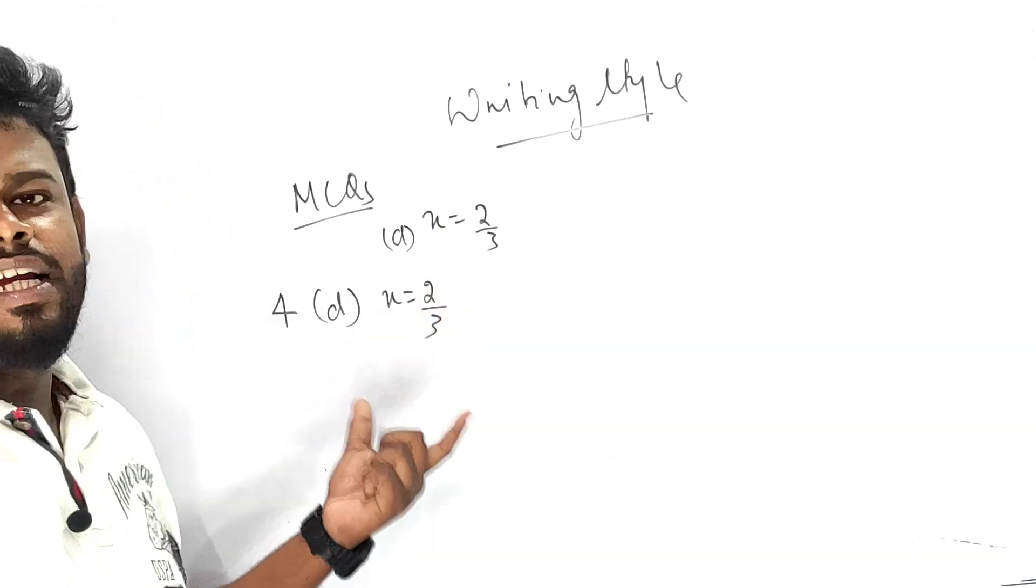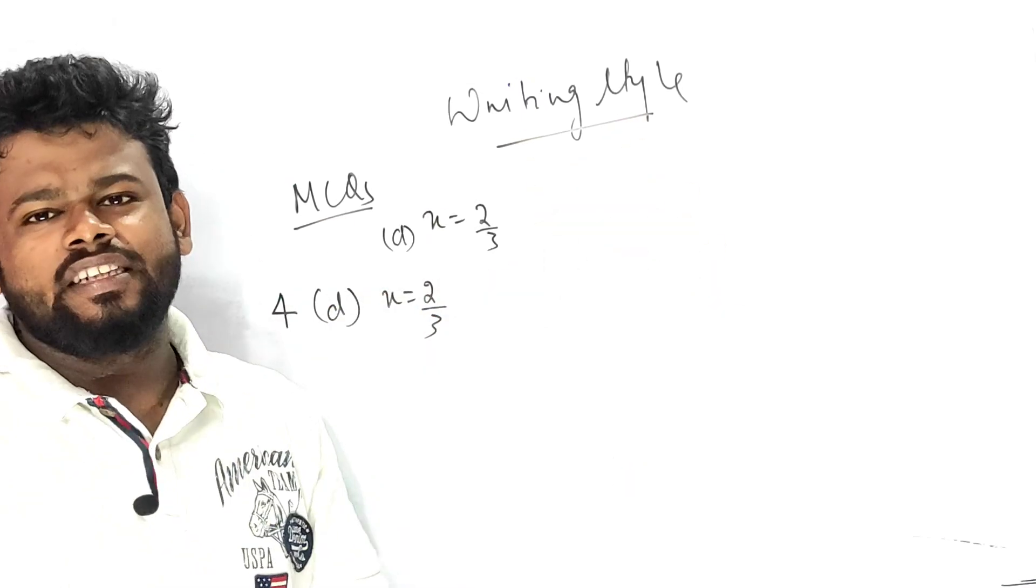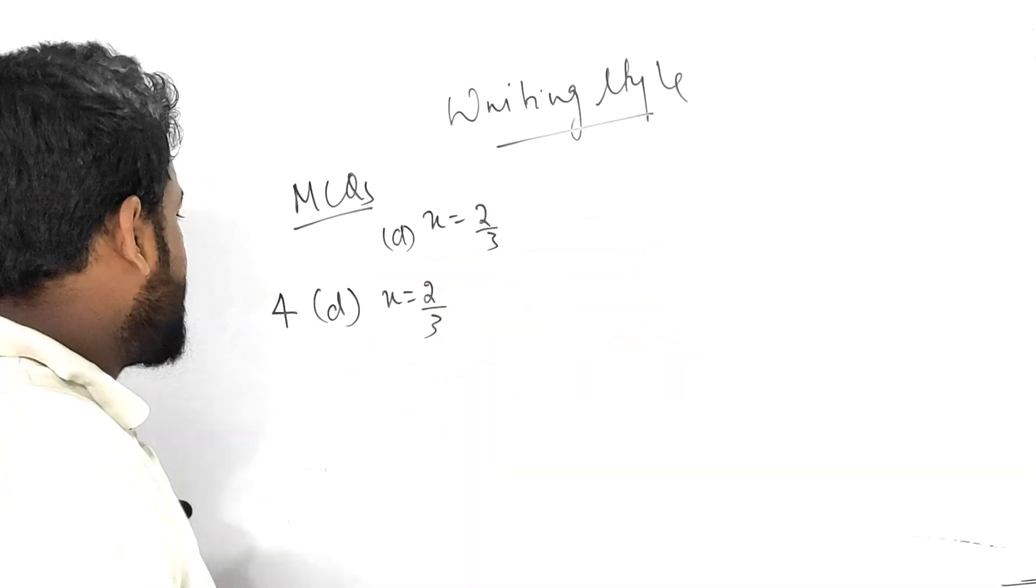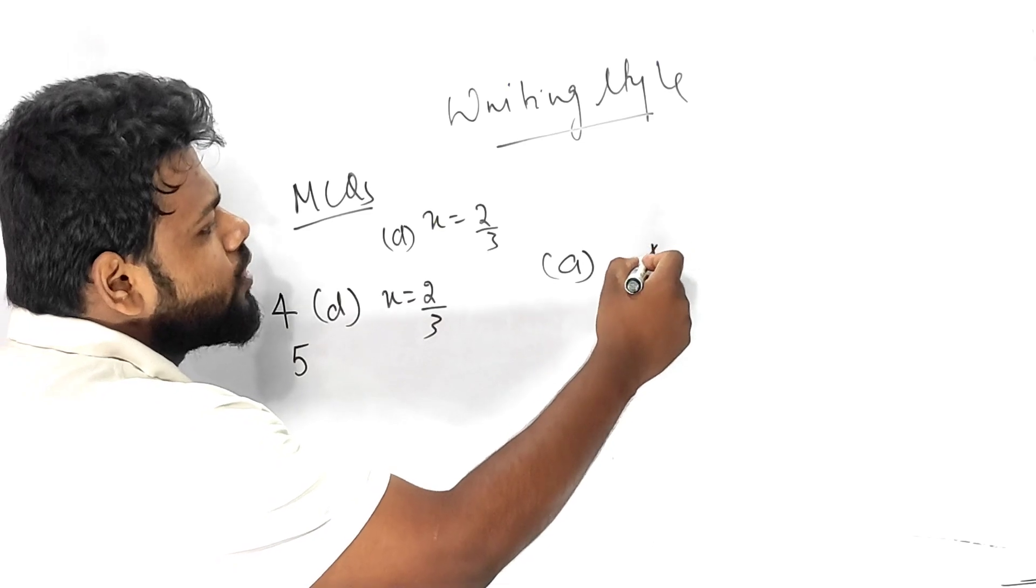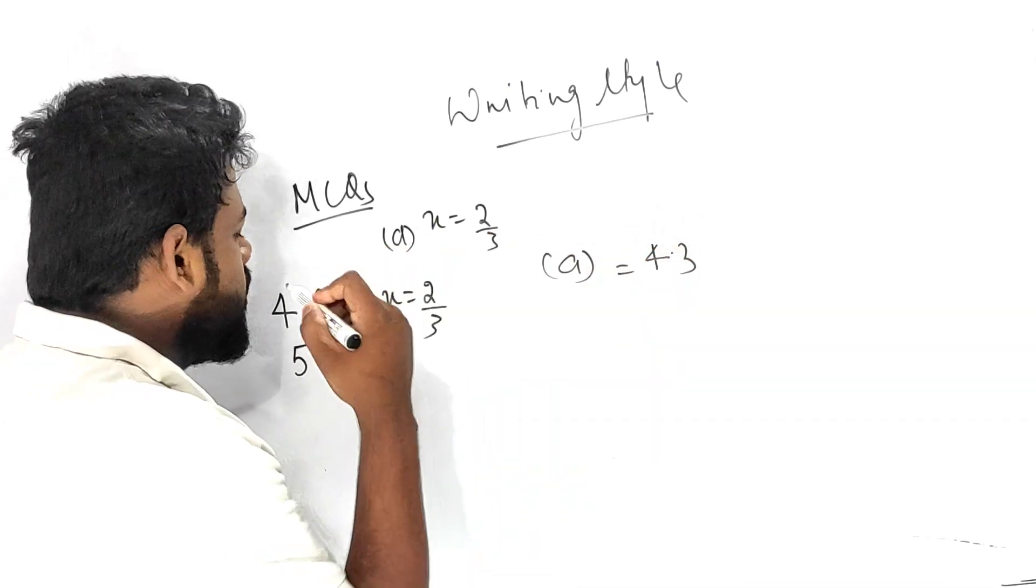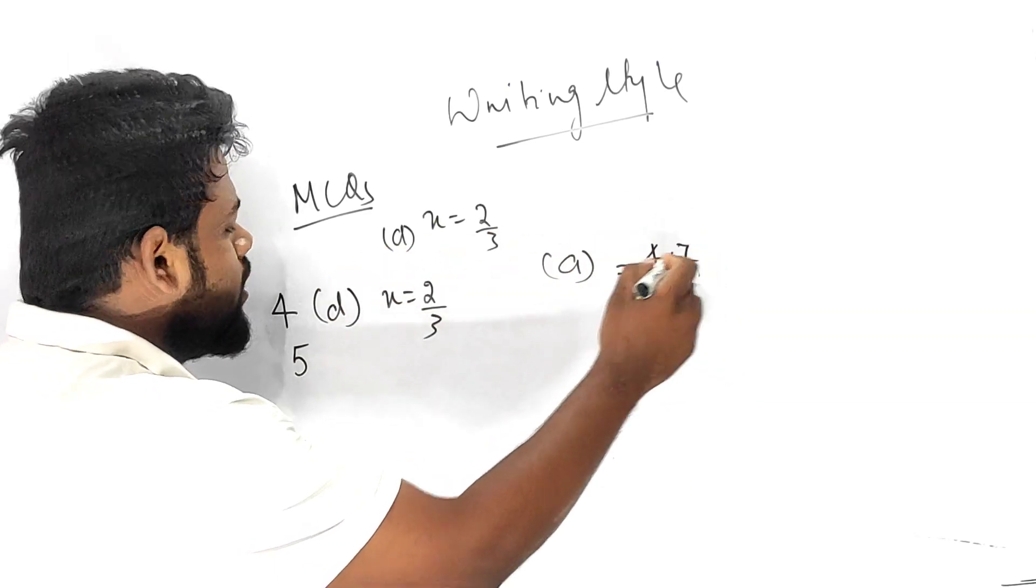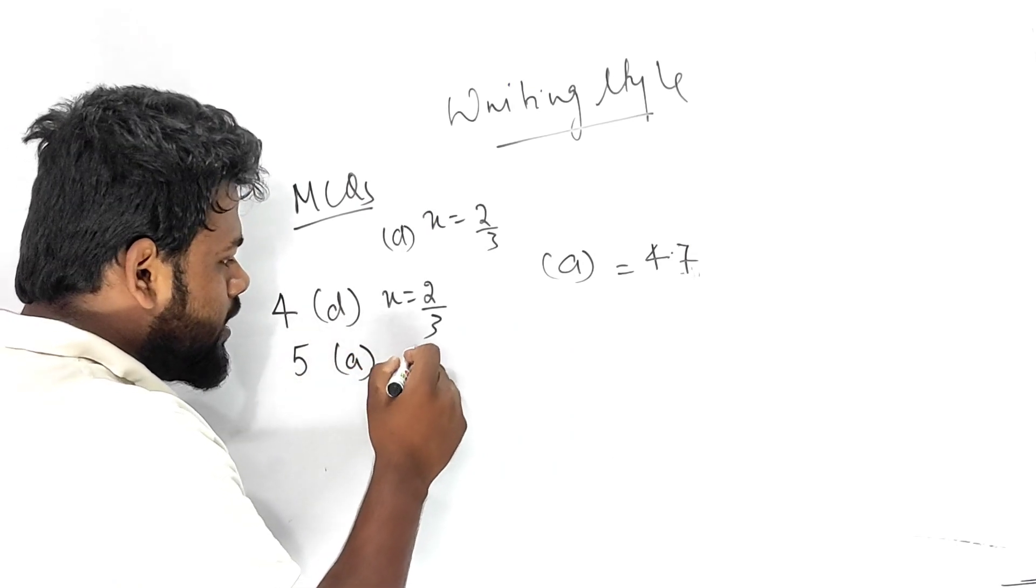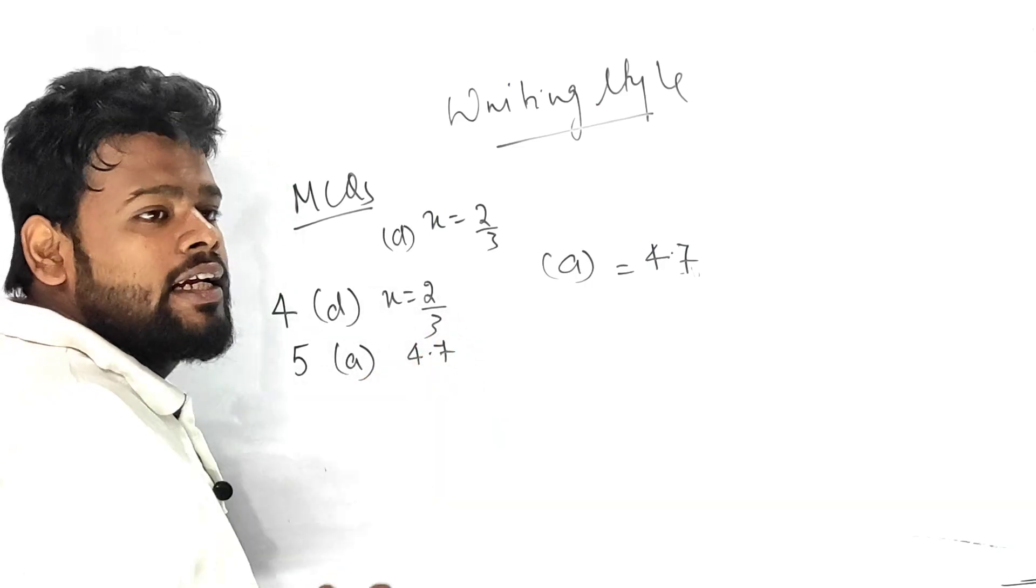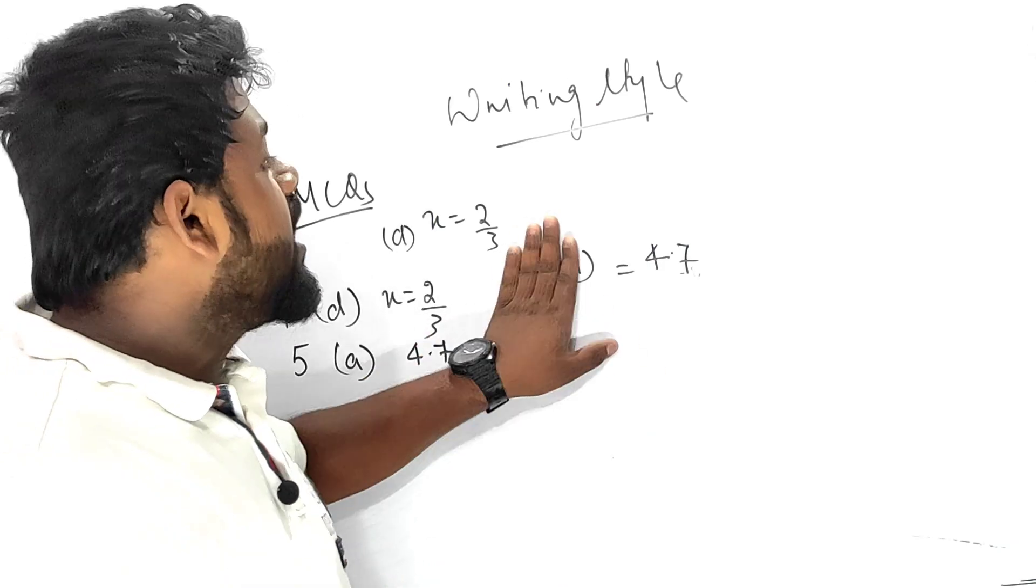Suppose number 5's answer is a), that is all about 4.3 or 4.7. What you have to write? a) that is 4.7. In this way you have to write it down.